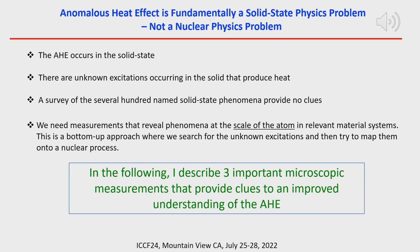The anomalous heat effect is fundamentally a solid-state physics problem, not a nuclear physics problem. It occurs in the solid state. There are unknown excitations occurring in the solid state that produce the heat. A survey of several hundred named solid-state phenomena provides no clues, and so we need measurements that reveal phenomena at the scale of the atom in relevant material systems. This is a bottom-up approach where we search for the unknown excitations and then try to map them onto a nuclear process. I describe three important microscopic measurements that provide clues to an improved understanding of the AHE.